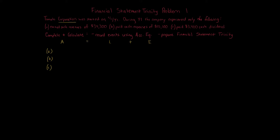The first transaction: earned cash revenues of $34,300. For assets, we have an increase in cash of $34,300. No liabilities are affected. For equity, revenues go under retained earnings on the stockholders' equity side. I'll note it is a revenue. So retained earnings goes up by $34,300 and our equation balances.